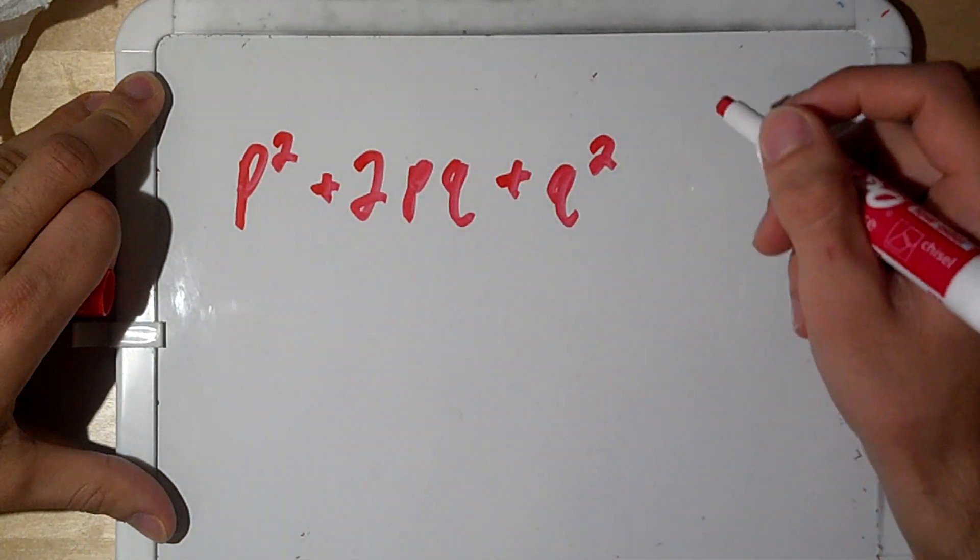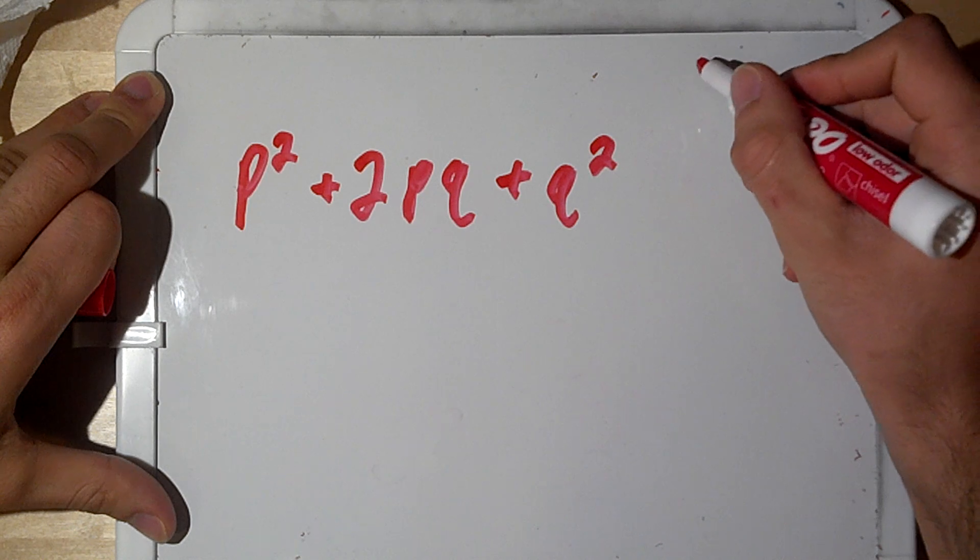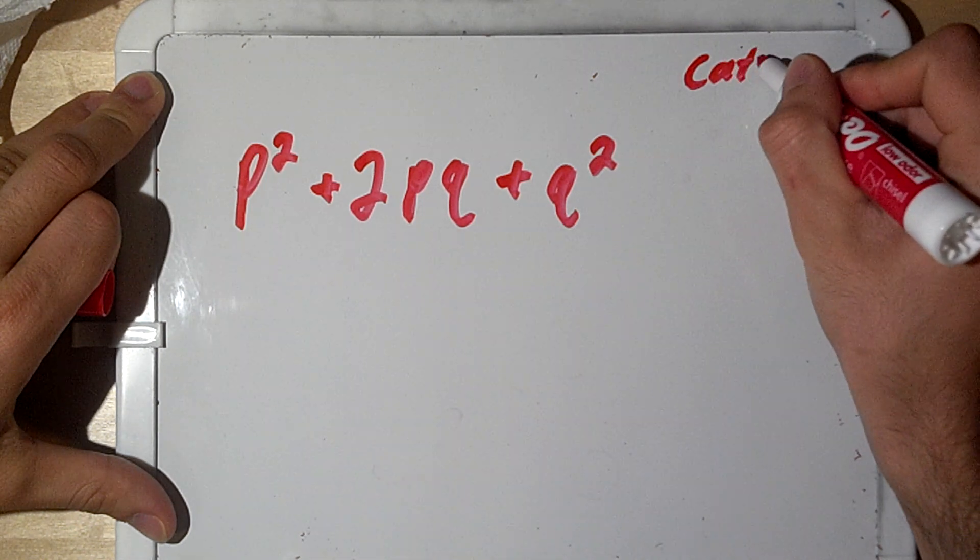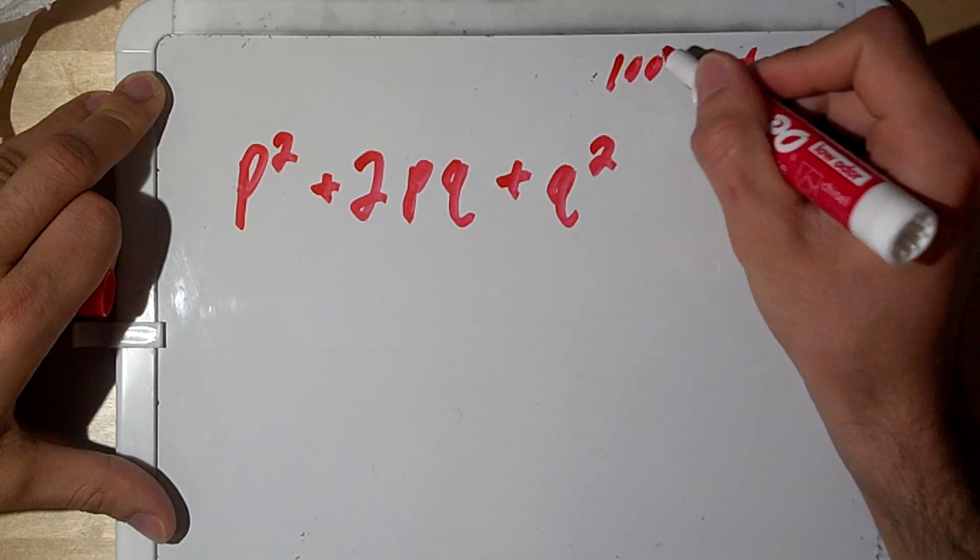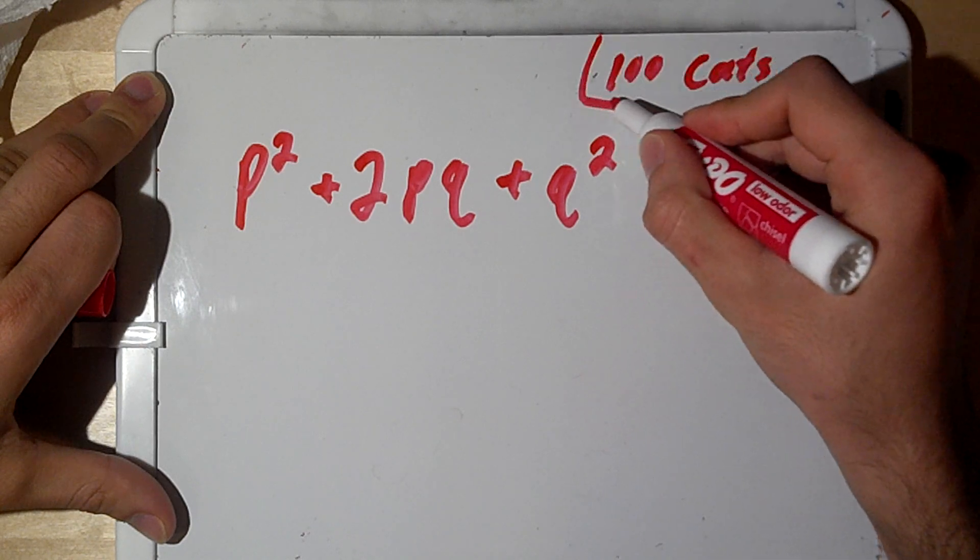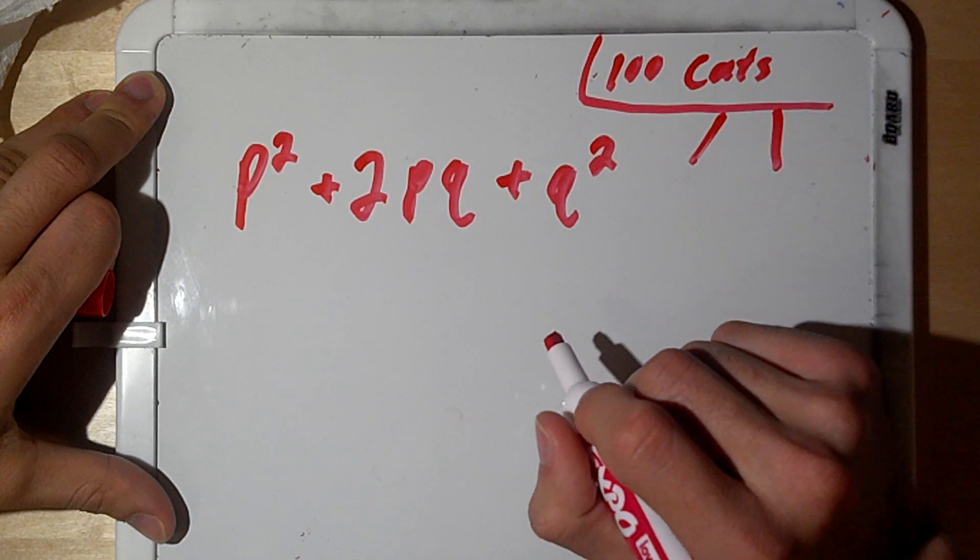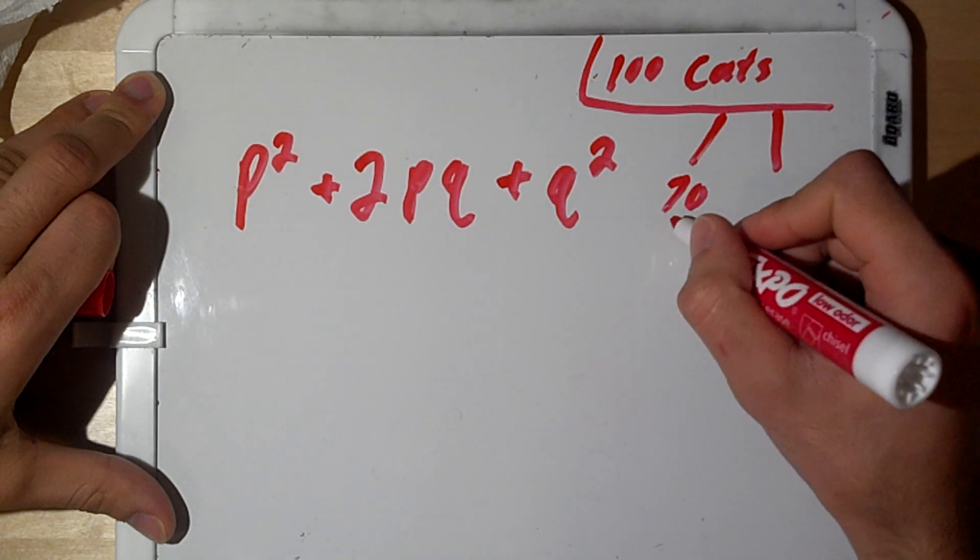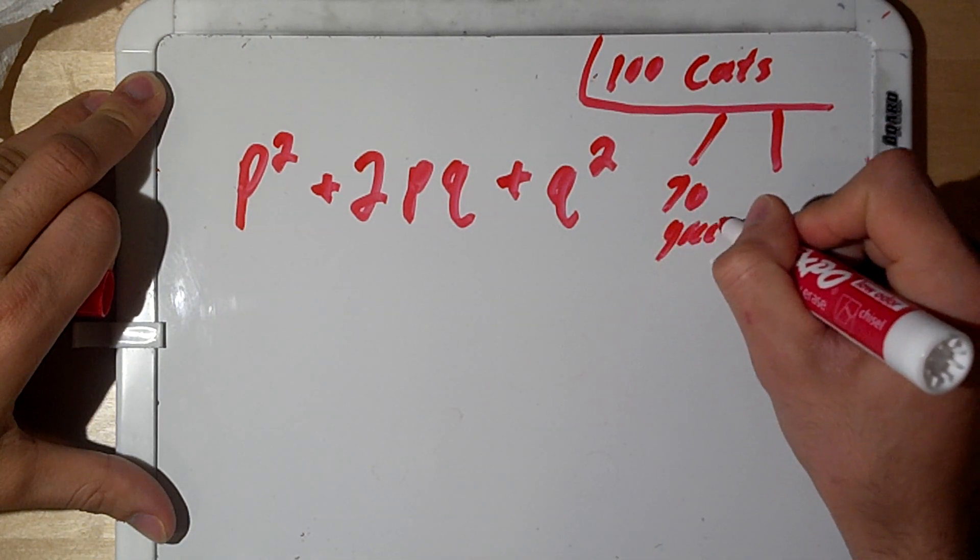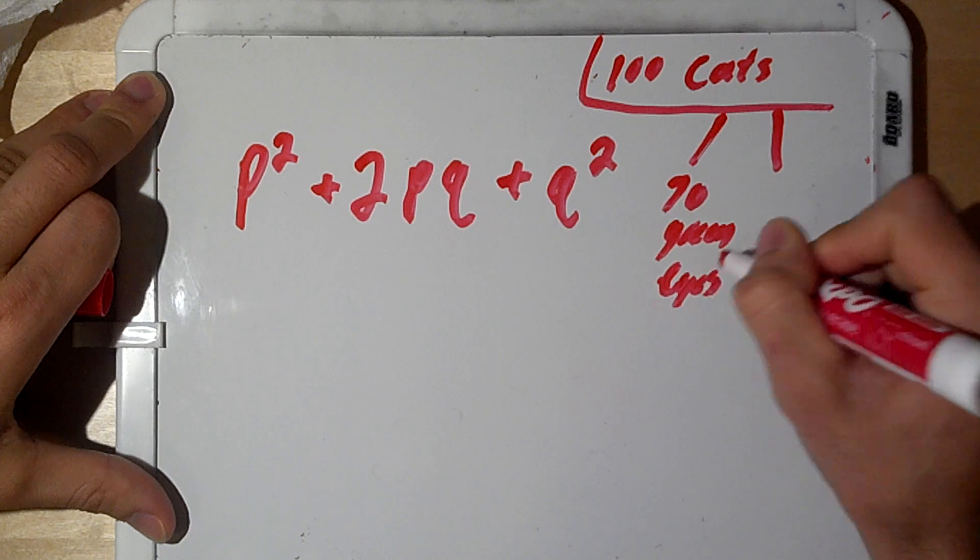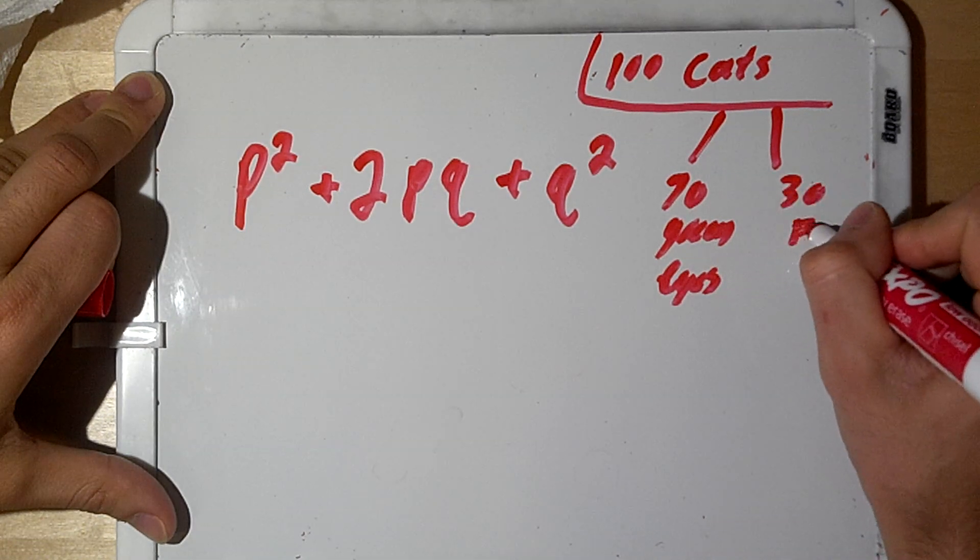So, we're going to put this aside for a time. We're going to talk about cats. Let's say there are 100 cats in a population. Now, within these 100 cats, we have, we'll say, 70 green eyes and we have 30 blue eyes.